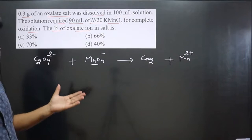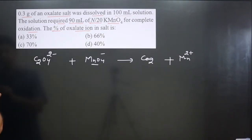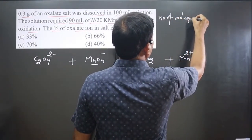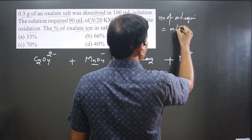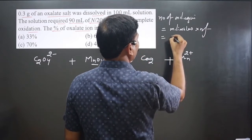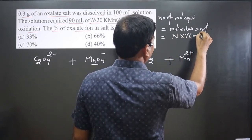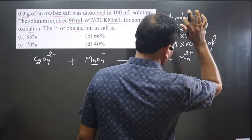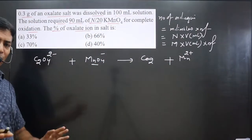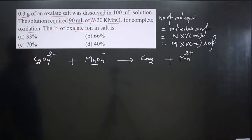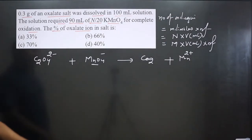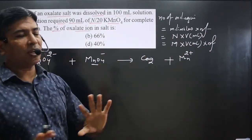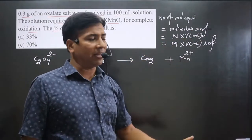We need to calculate the n-factor value — the equation is ready. The formula for milliequivalents is: milliequivalents = millimoles × n-factor, or normality × volume in mL, or molarity × volume in mL × n-factor. These three formulas should be remembered. If normality is given, n-factor is not separately required.